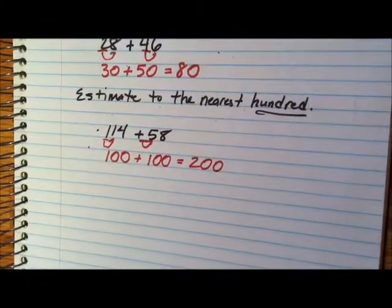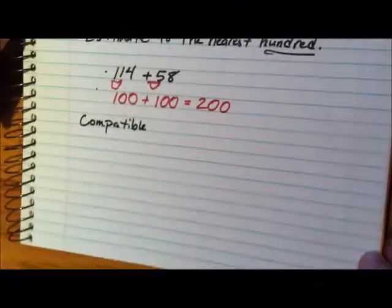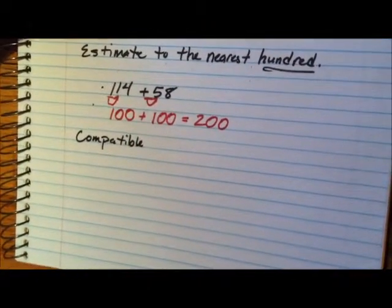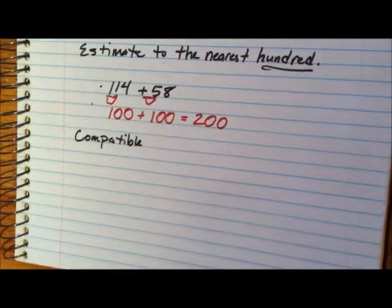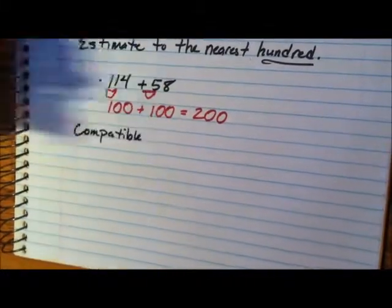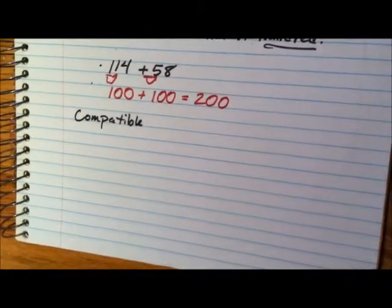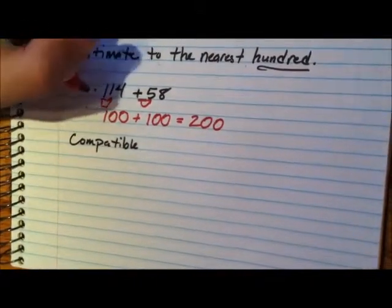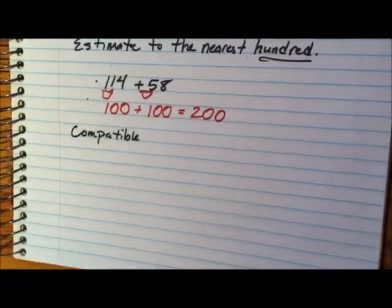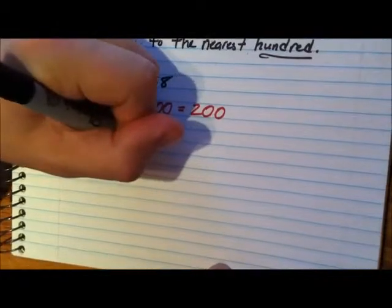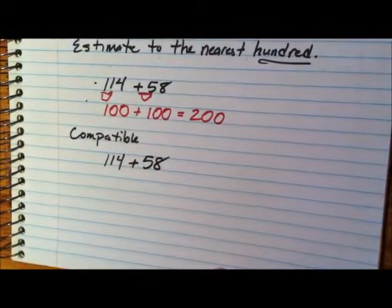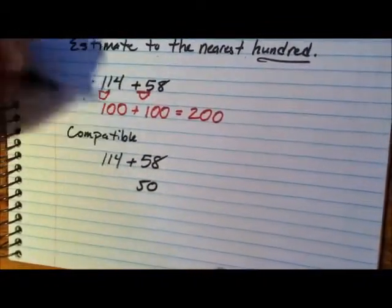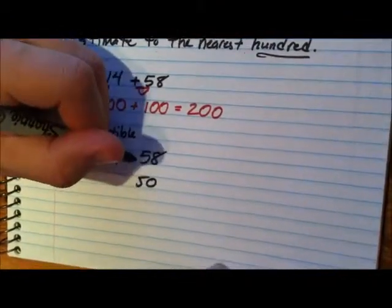Let's look at that problem a different way. A lot of you might be thinking: why would we round fifty-eight all the way to a hundred? That seems pretty silly — fifty is a lot closer, and you would be right. So the third way of rounding involves something called compatible numbers. With compatible numbers, you use numbers that are really close to fifties or fives, or when you round both numbers and add them together, they make a ten. We could round fifty-eight to fifty — that's okay to do. It's close enough. It's better than rounding it to a hundred because fifty is closer to fifty-eight than a hundred is.